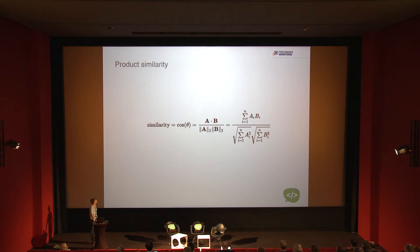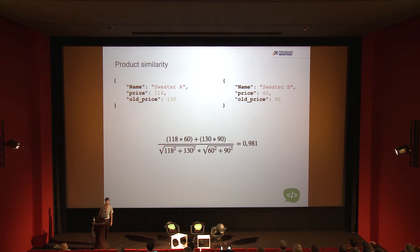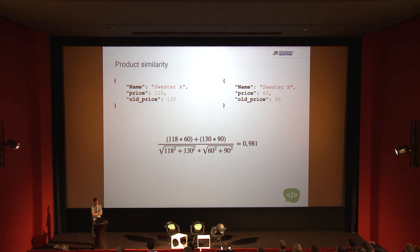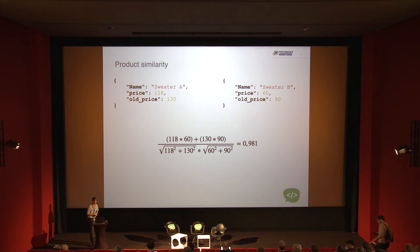The formula looks a bit scary, but if you plug in the numbers it's not so bad. On the top we're doing the dot product of the two vectors — taking price one and multiplying it with price two, and adding the old prices together. At the bottom, we take the length of each vector, square root it, and multiply them. This gives us 0.981, meaning these products are 98% similar.